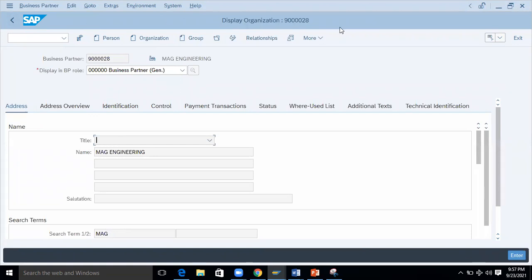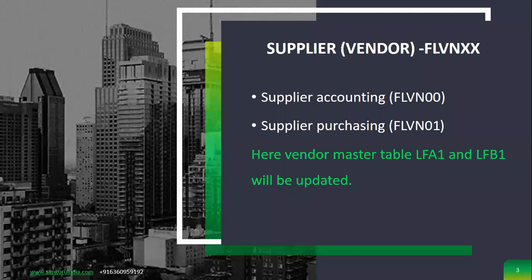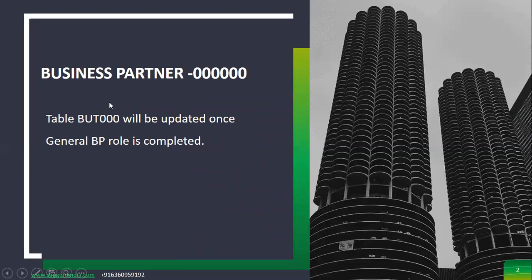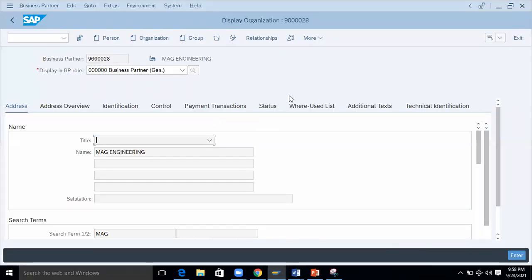You can see this is a display of the business partner. Let me explain what supplier-related data needs to be maintained. It is supplier accounting and supplier purchasing. The BP role FLVN00 is for supplier accounting and FLVN01 is for supplier purchasing. This data will be stored in tables LFA1, LFB1. The previous general data is stored under table BUT000.